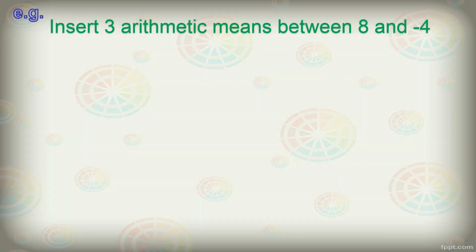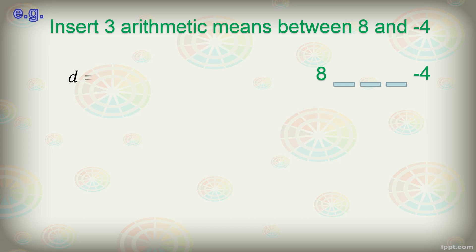Let's have this: Insert three arithmetic means between 8 and negative 4. We are asked to look for three arithmetic means, so our sequence will be: 8, blank, blank, blank, blank, negative 4. In order to fill out these blanks, we need to first find the common difference using the formula: D equals a sub n minus a sub 1 divided by n minus 1.